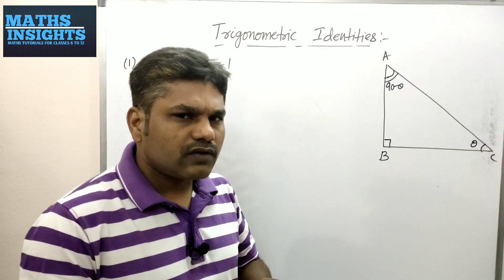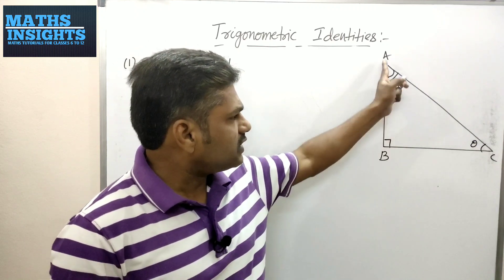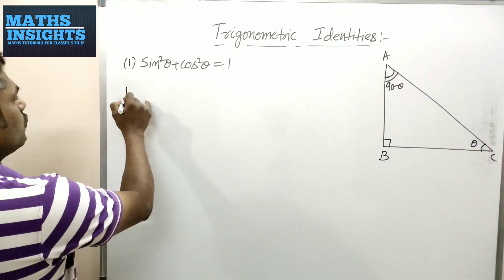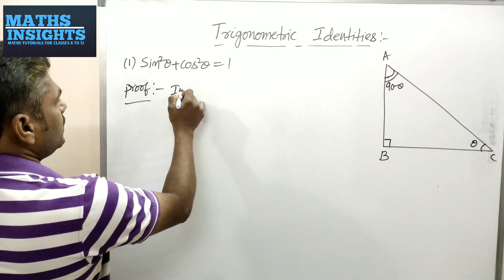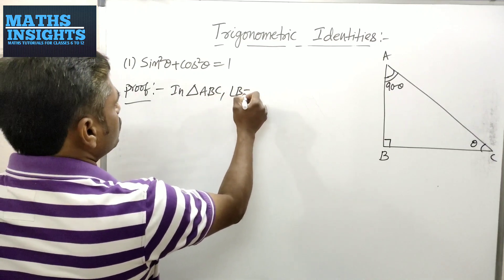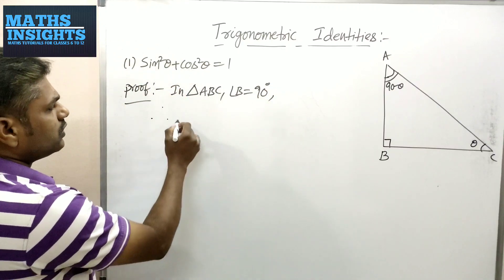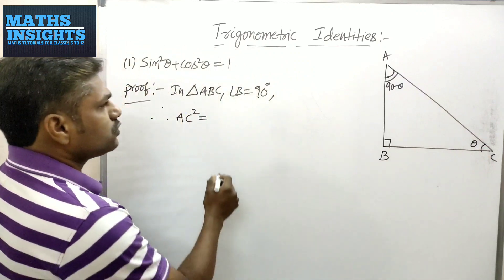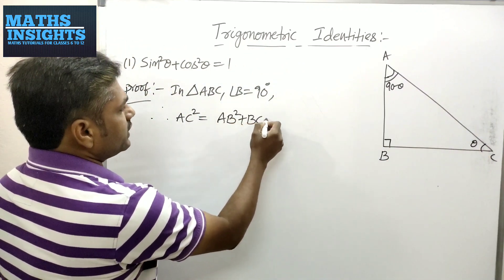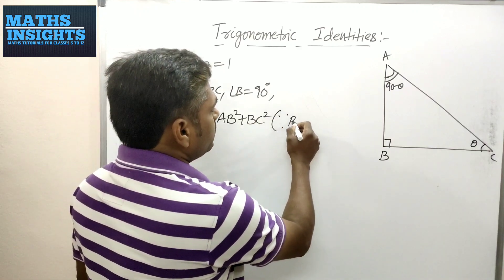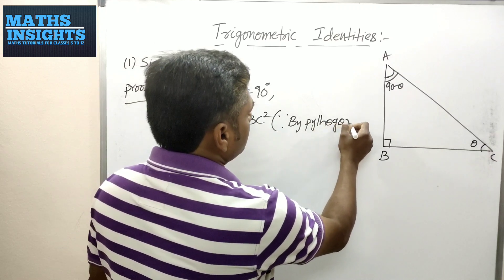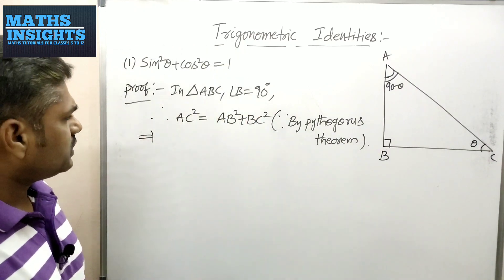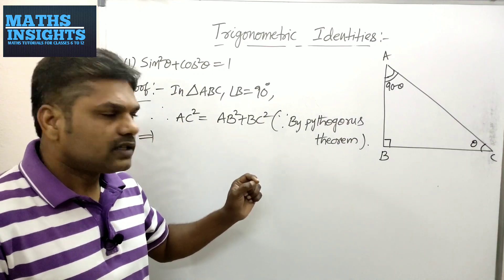Pythagoras theorem says that the square of the hypotenuse, which is opposite to the 90° angle, is equal to the sum of squares of the remaining two sides. In triangle ABC, angle B = 90°. Therefore, AC² = AB² + BC², by Pythagoras theorem. This is the equation we have obtained.